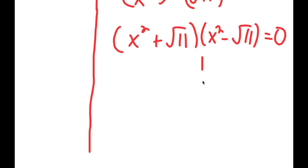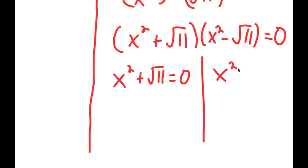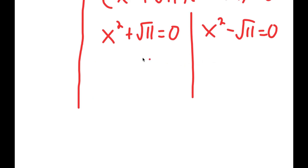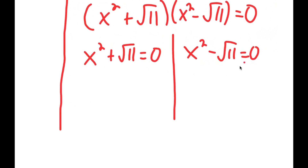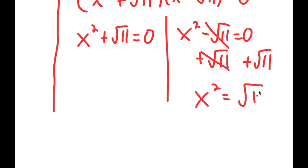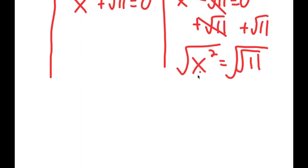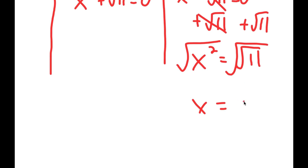For x squared minus the square root of 11 equals 0, I add the square root of 11 on both sides to get x squared equals the square root of 11. Taking the square root of both sides, the square root of x squared is x and the square root of the square root of 11 is the fourth root of 11. So x equals positive or negative the fourth root of 11.